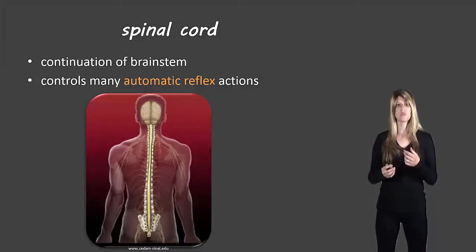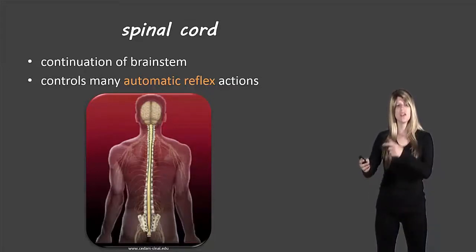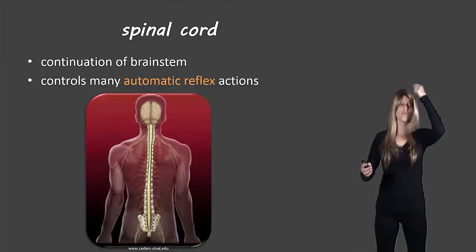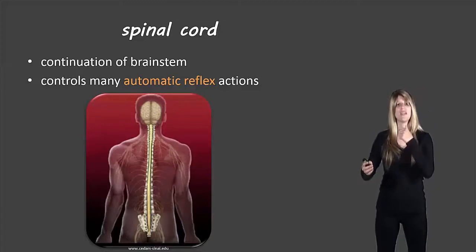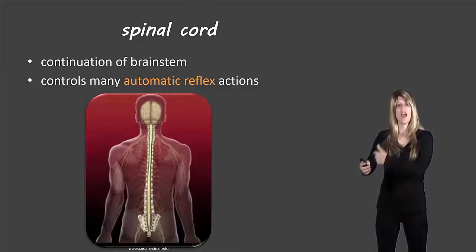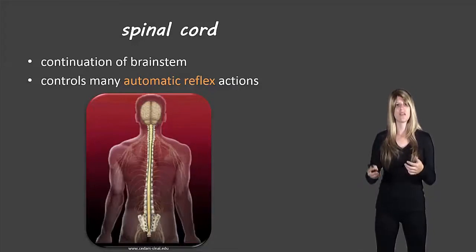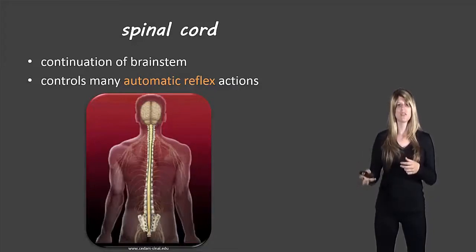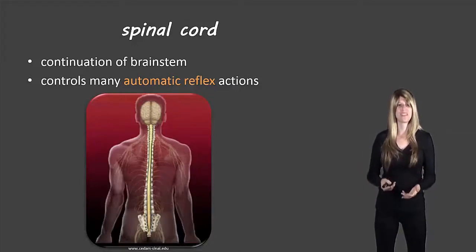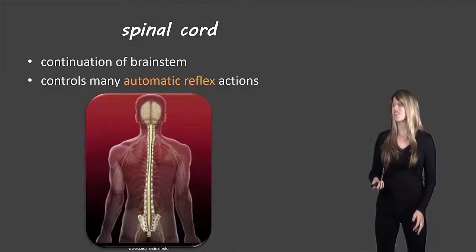This actually happens in the spinal cord — it's much faster because the nerves only need to go to the spinal cord, not all the way up to the brain. It comes to the spinal cord and sends that information directly, without the same processing time, so that you can drop it quickly without burning yourself as much.